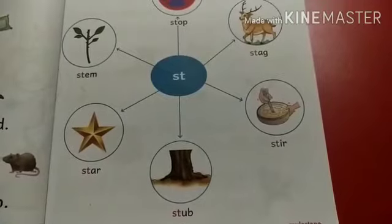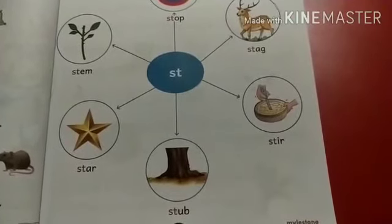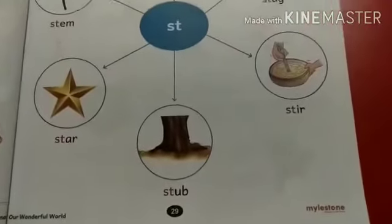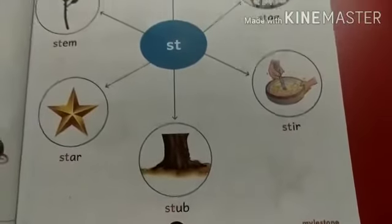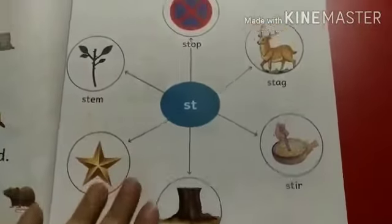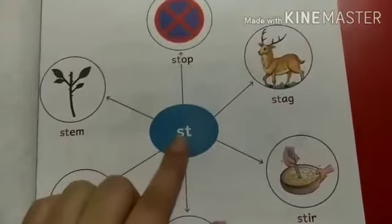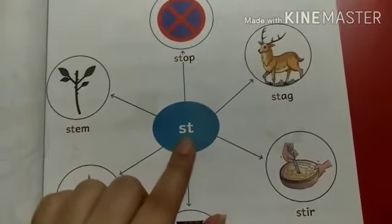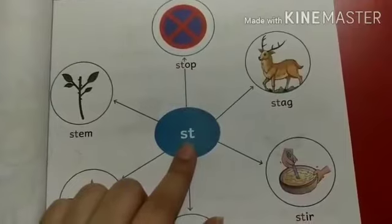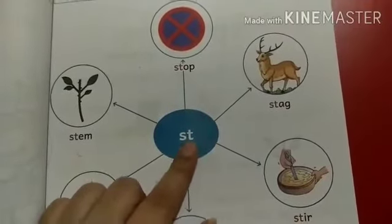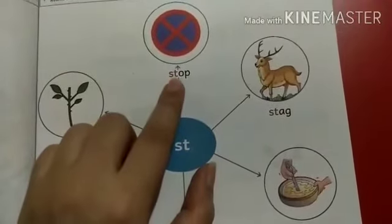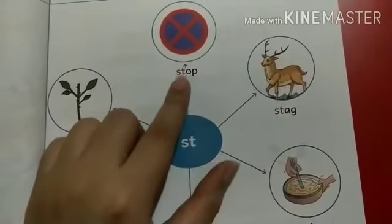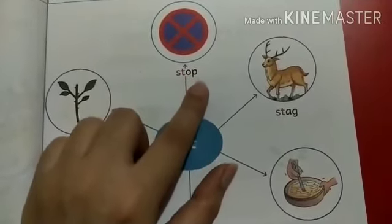Now we will read 'st' blend words from the Language Picture Dictionary book at page number 29. So let's start reading. It's 'st.' Children, read after me: st. Now let's read the words. St, op — stop.